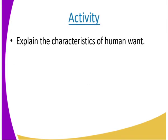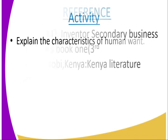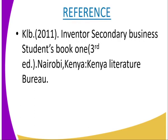Activity: Explain the characteristics of human wants. Reference: KFB 2011 — Invent a Secondary Business Studies Book One, Third Edition.